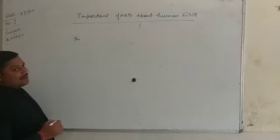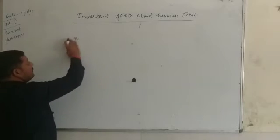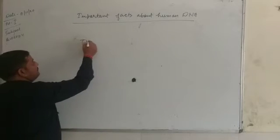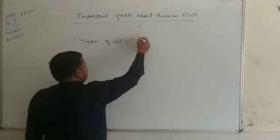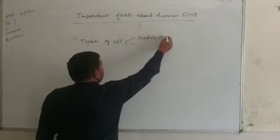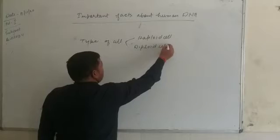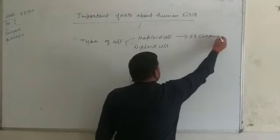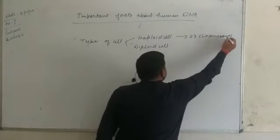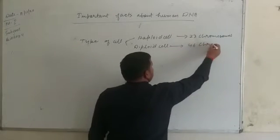The human cell consists of two types of cells. One is the haploid cell, which has 23 chromosomes. The second is the diploid cell, which has 46 chromosomes.